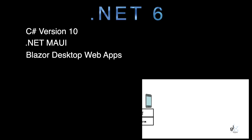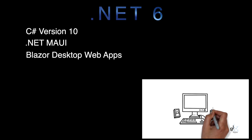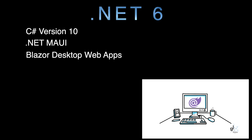Blazor desktop web apps with native device capabilities. One advantage is that if you are a web developer and don't want to learn XAML to implement front-end code as you would with WPF, UWP, or Xamarin Forms, you can use HTML5, CSS, Bootstrap, and JavaScript — the web technologies with which you are already familiar — to create desktop applications. Through Blazor desktop, you will still be able to leverage native device functionality without learning new technologies.